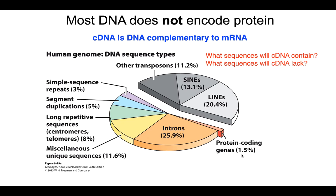But we don't want to just clone that gene from human DNA, because the problem is that most of that gene is actually introns that don't encode the protein — that need to be spliced out. Which means if we put that gene into a host cell and we want that host cell to transcribe and translate that gene, it won't be able to, because it doesn't have the ability to splice out these introns.